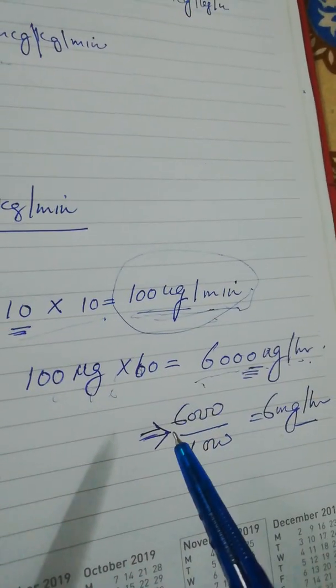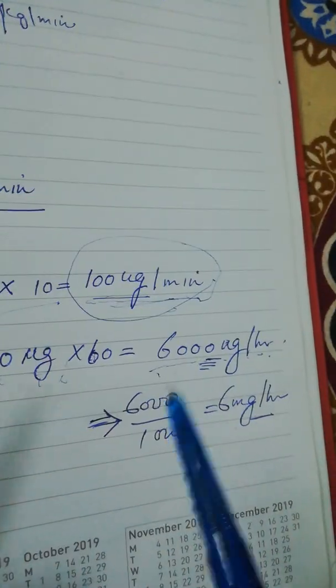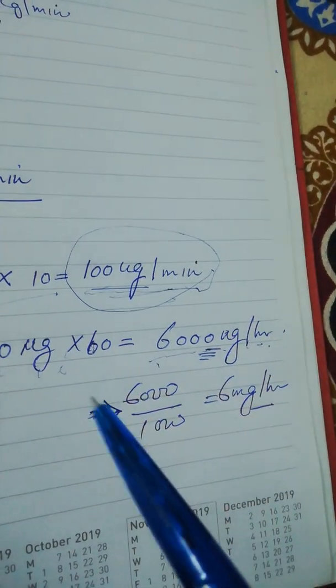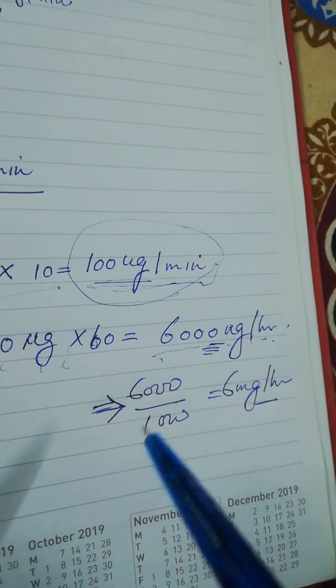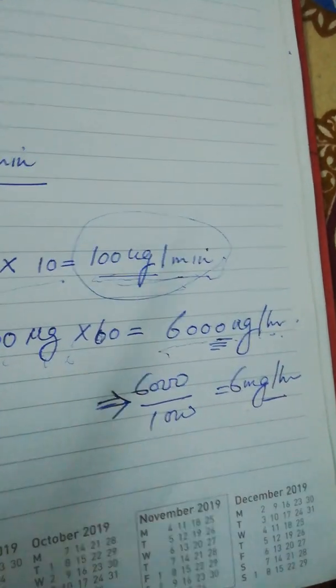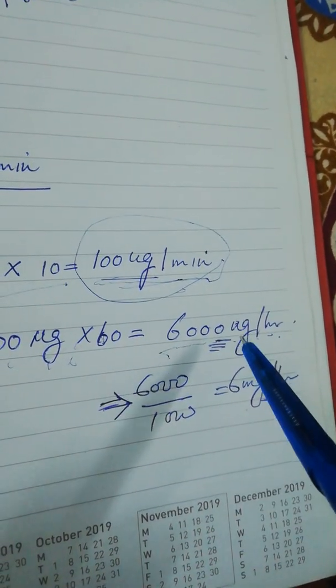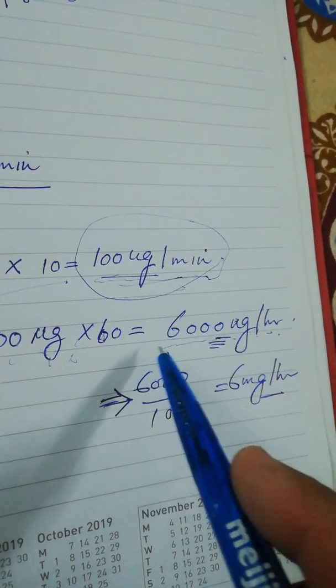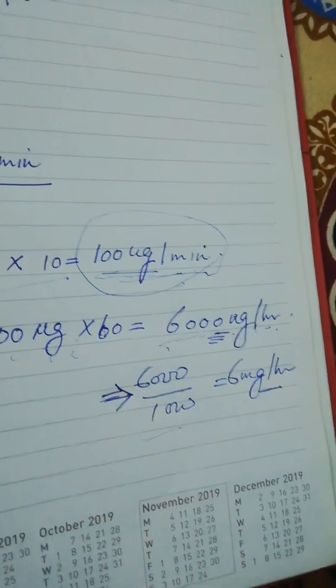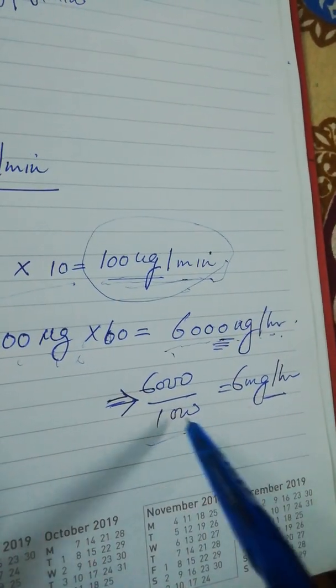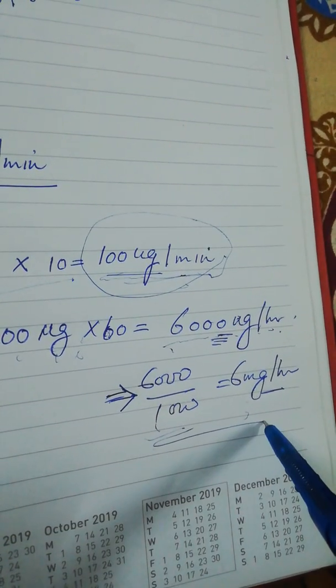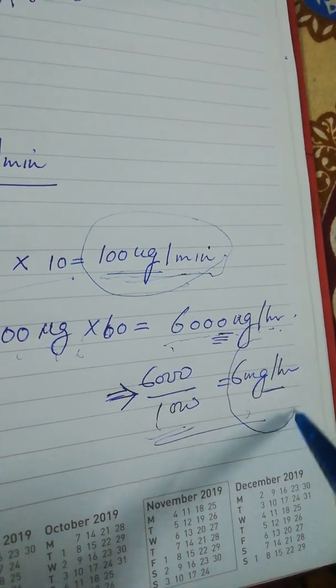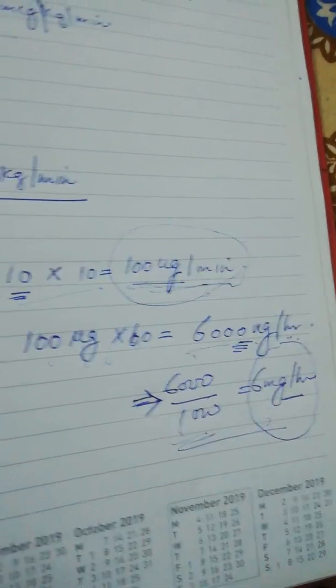Our target will be to deliver the patient 6000 microgram per hour. Now, the injection dopamine usually comes in vials which contain 40 mg per ml. To avoid the confusion of microgram, we divide 6000 by 1000 to convert it into mg. We will have to give this patient 6 mg per hour.